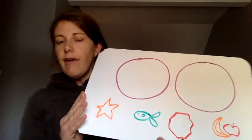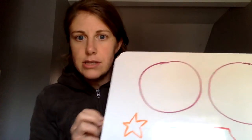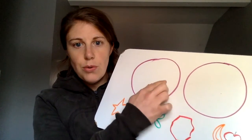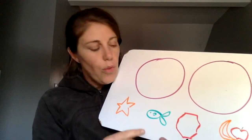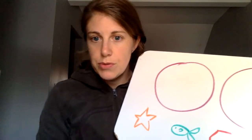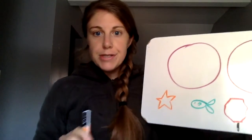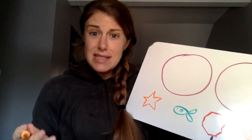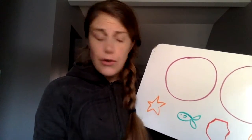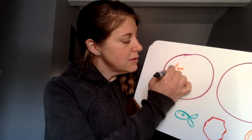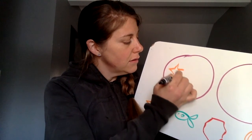So now that I've been listening carefully to the sounds at the beginning of those words, I want to put them in two groups. Things that begin with the same sound, I want to put in the same groups. So I'm going to start with the star, and because it's the first one, I'm just going to pick a circle. So I'm going to put the star in this circle.